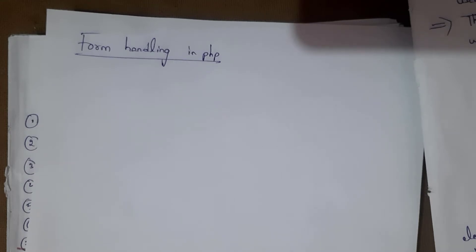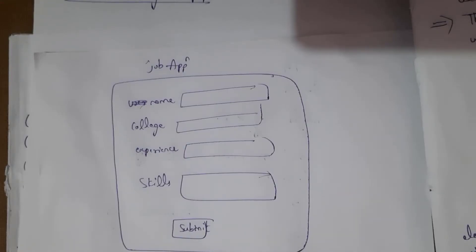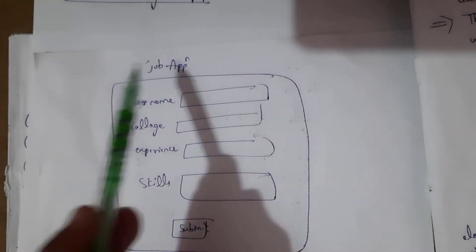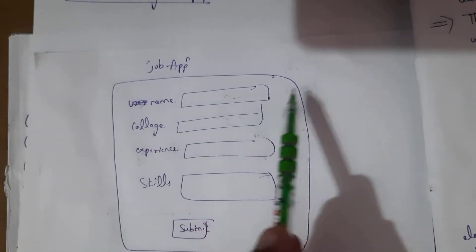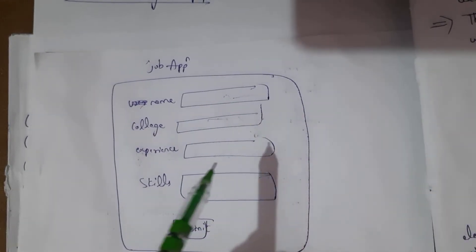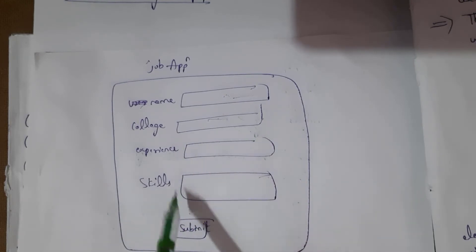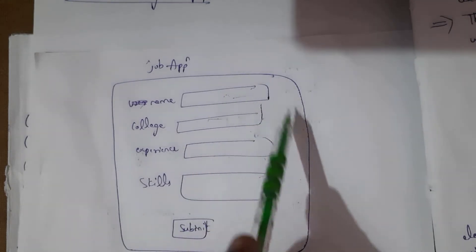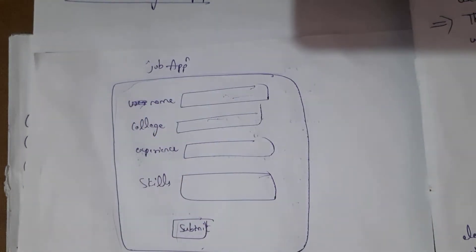In this video I am going to explain form handling in PHP. We all know what a form is — for example, if I want to send any application on the internet, I need to fill in a form by entering my details and clicking submit. This is an example of a job application form where I enter username, college, experience, and skills, then click submit.